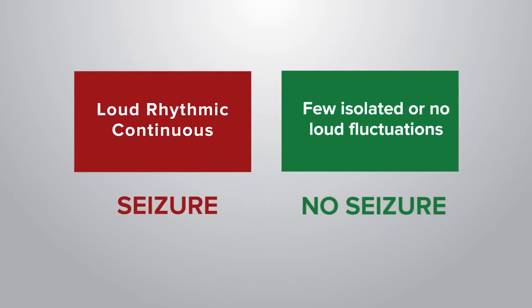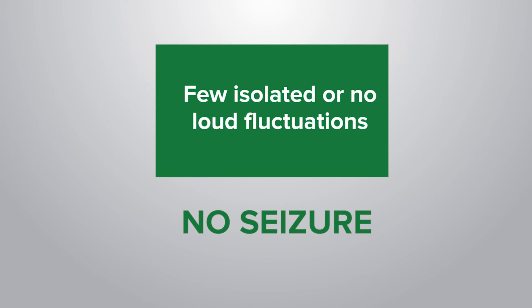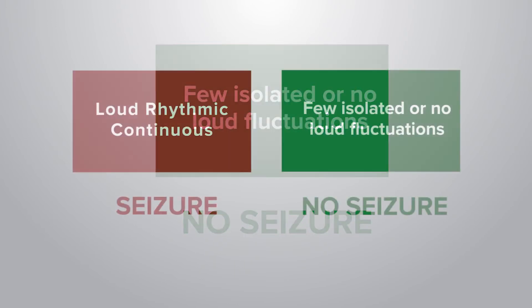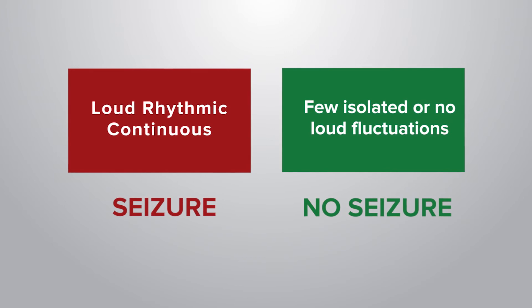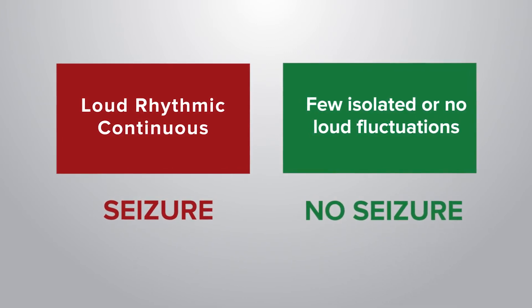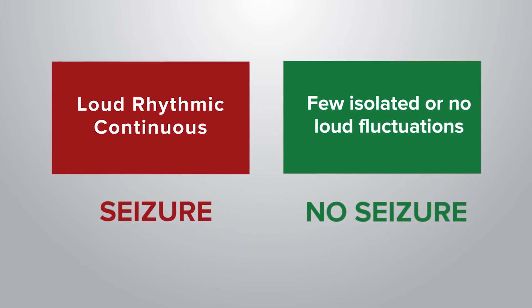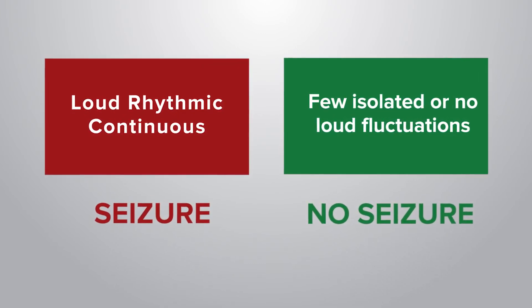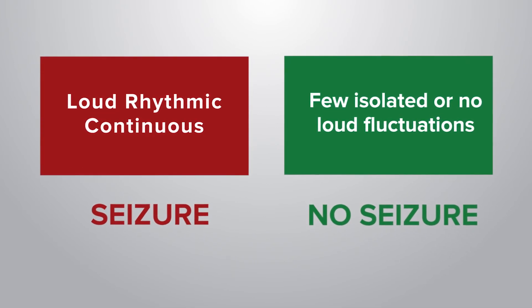If the sound is flat with no rhythmic fluctuations, or if there are only occasional fluctuations that are isolated and not continuous, it is more likely that the patient is not having a seizure. In summary, seizures can be distinguished by loud, rhythmic, and continuous fluctuations of the sound, whereas non-seizure conditions have only a few isolated fluctuations or no loud fluctuations at all.